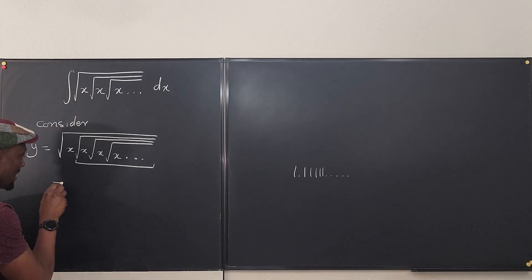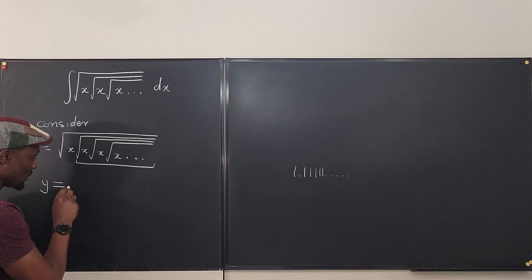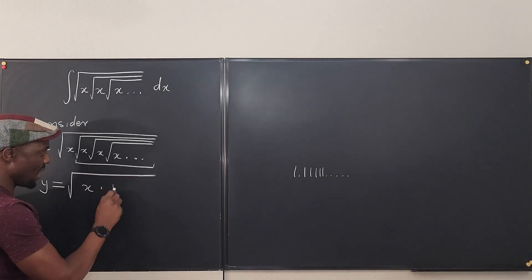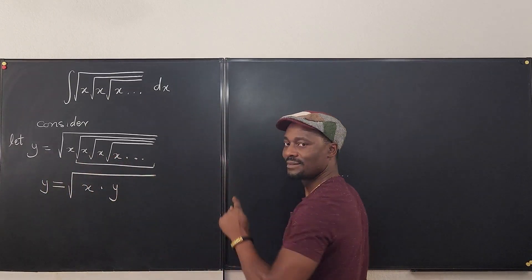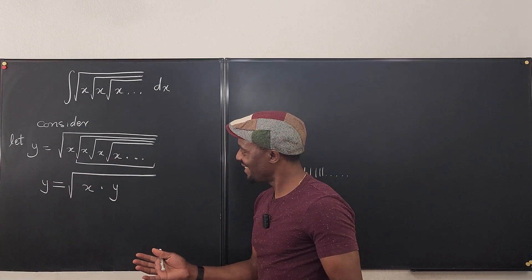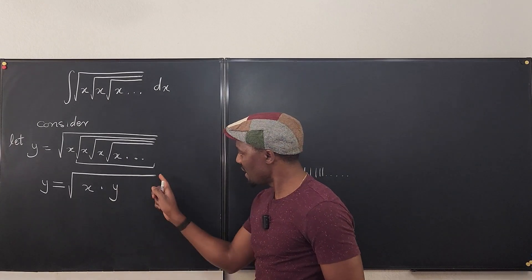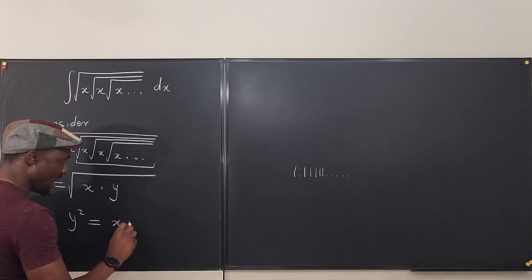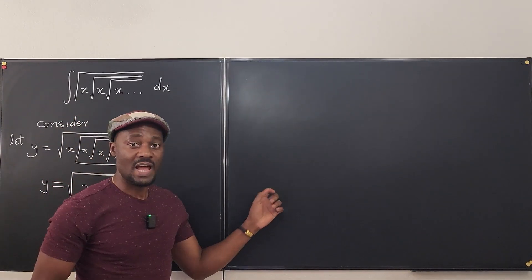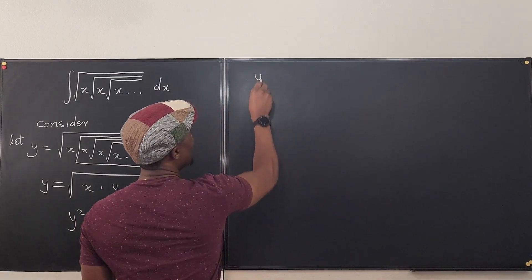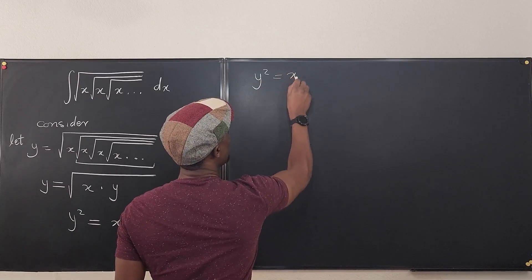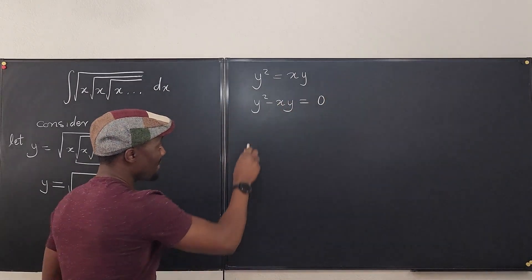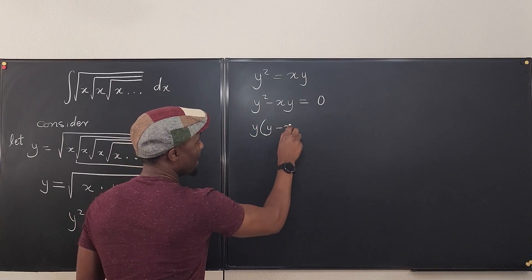So I can actually write this as: y is equal to the square root of x times y — because instead of writing all of that infinite chain, I just multiply by y, since y is this same expression. So this is what I have — I have an equation. If I want to get rid of the square root sign, I can square both sides. I can say y squared equals xy. And now I can solve this: y squared minus xy equals zero. If I factor out y, I get y times (y minus x) equals zero.